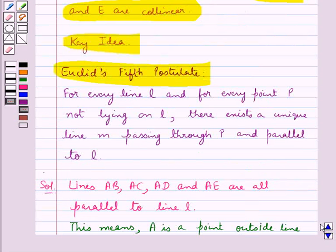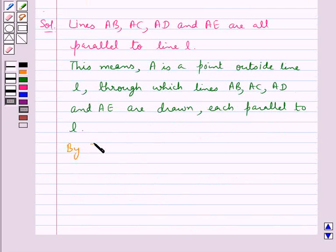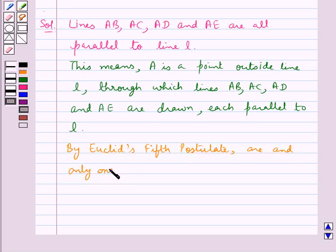But from Euclid's 5th postulate, we have that for every line L and every point P not lying on L, there exists a unique line M passing through P and parallel to L. That is, by Euclid's 5th postulate, one and only one line can be drawn through A and parallel to L.